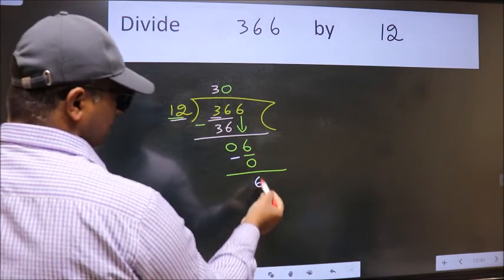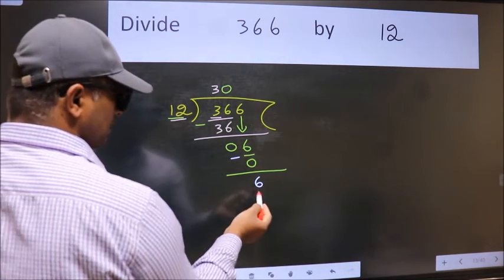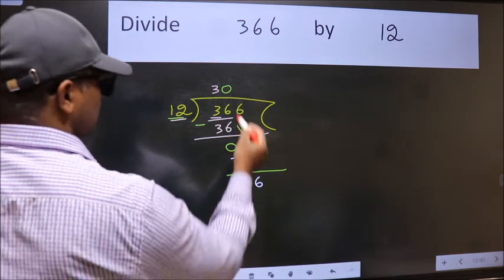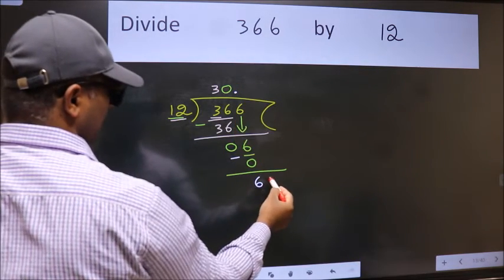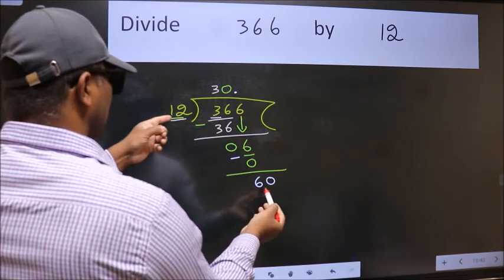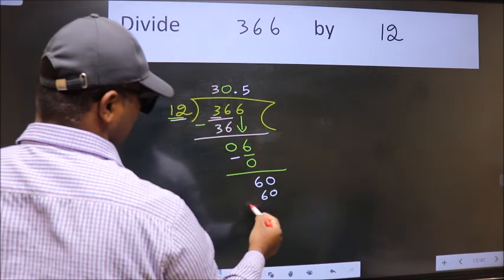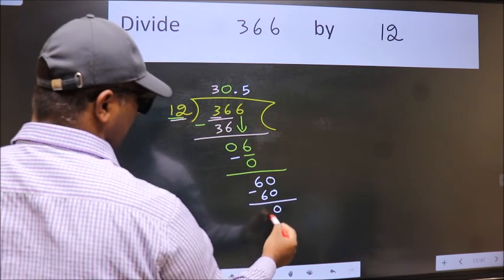Over here we did not bring any number down, and 6 smaller than 12. So now we can put dot and take 0. So 60. When do we get 60 in 12 table? 12 fives, 60. Now we subtract. We get 0.